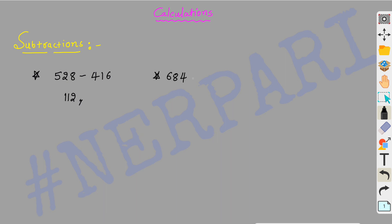Let's give this number: 684 minus 458. In 600 it's 400, right? So that's 200. We have 84, we have 58. Now 58 is higher than 84 - wait, it's higher than 38. So we use this process: 58 plus 6 is 64, so 84 minus 58 is 26. So 200 plus 26 is 226. Okay.